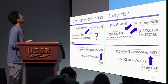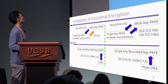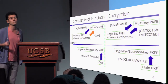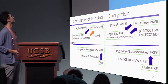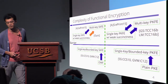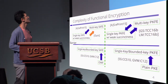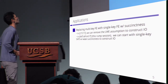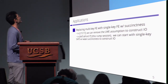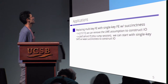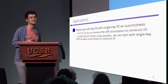We resolve this problem, so now we can construct a multi key secret key functional inclination from single key SKFE with weak succinctness. So what is the application of our result? We can replace the multi key SKFE with single key SKFE with weak succinctness.